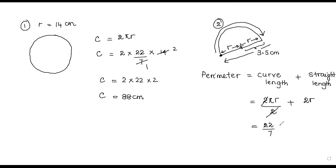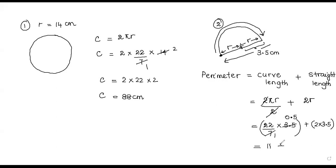π is 22 over 7, and the r value given is 3.5. That is one portion; the next part is the straight length, 2 times r, so 3.5 times 2. Now 7 times 1 and 7 times 0.5: 22 multiplied by 0.5 gives 11, and 2 multiplied by 3.5 gives 7. So altogether the answer is 18 centimeters. That is the perimeter of this half circle.